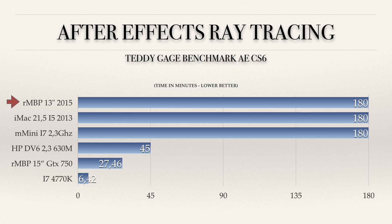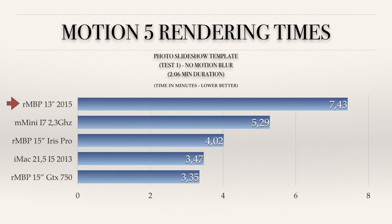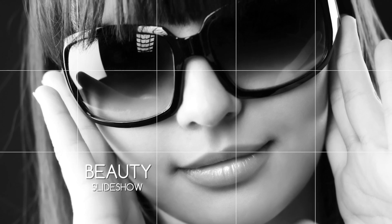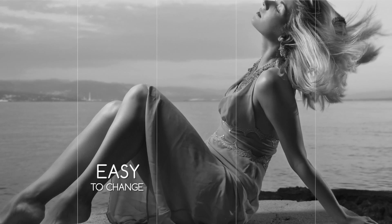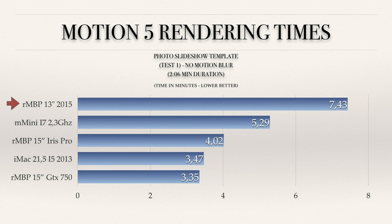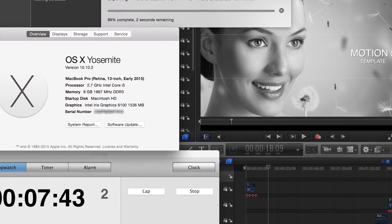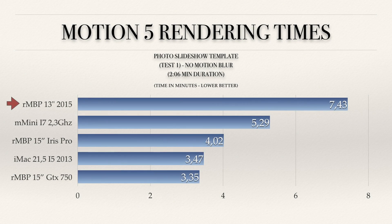The machine I'm currently using to work is my i7-4770K desktop Windows machine. Moving on to Motion 5 rendering times: the Photo Slideshow template, which has 2 minutes and 6 seconds of duration with no special effects — just simple animation photo transitions, no motion blur. The Retina MacBook Pro 13-inch took 7 minutes and 43 seconds to render, which is acceptable. The Retina MacBook Pro 15-inch with Iris Pro takes 4 minutes, and with the GTX 750 enabled it takes 3 minutes and 35 seconds.